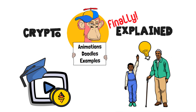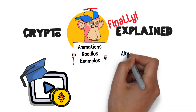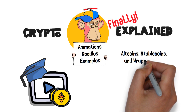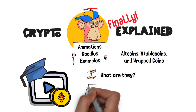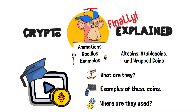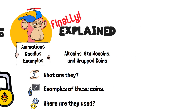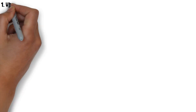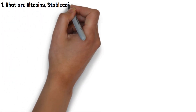In this video, we're going to talk about altcoins, stablecoins and wrapped coins. First, I'll tell you what each of these are and give you some examples. Then, we'll also discuss where these crypto assets are mainly used. Let's get to it! To start things off, in order to understand these concepts better, we need to break down each of the terms individually.